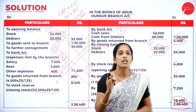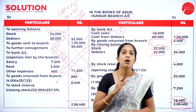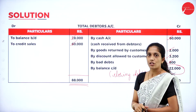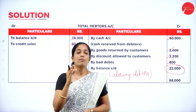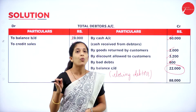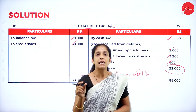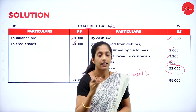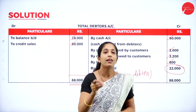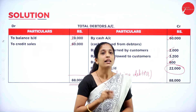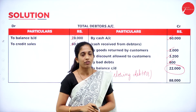This is a straightforward 15-marks problem. Sometimes the question may give opening furniture but not closing furniture — in that case: opening furniture + purchases − depreciation = closing furniture. Similarly for petty cash: opening petty cash + additions from head office − expenses paid = closing petty cash. These are simple calculations to find missing figures.